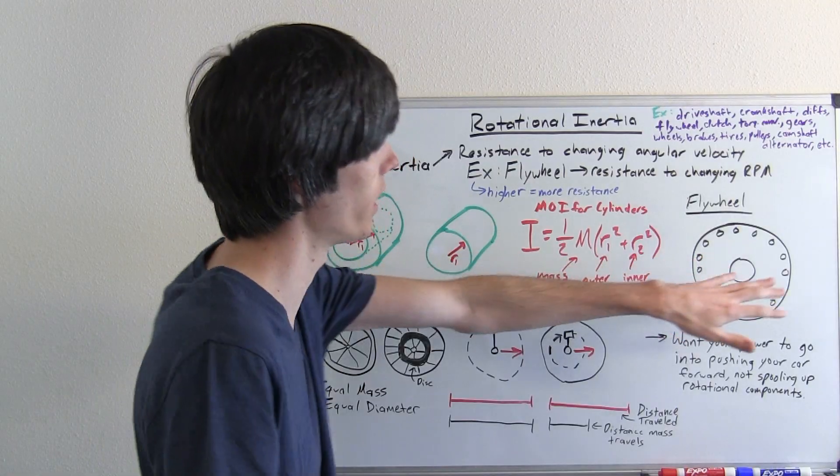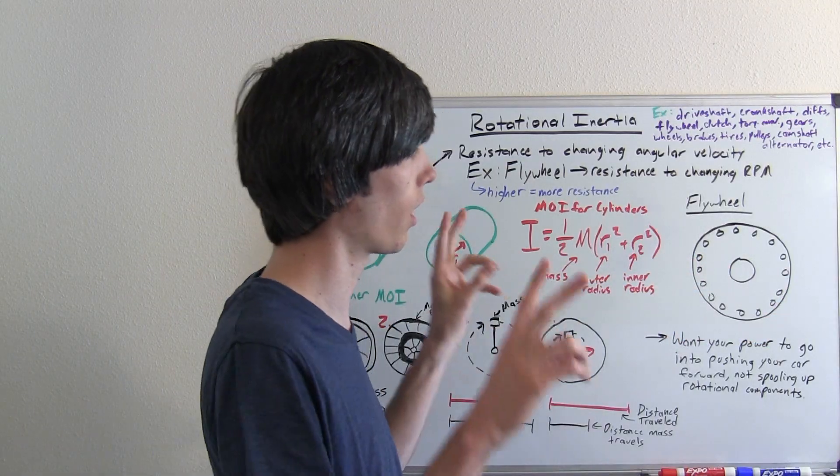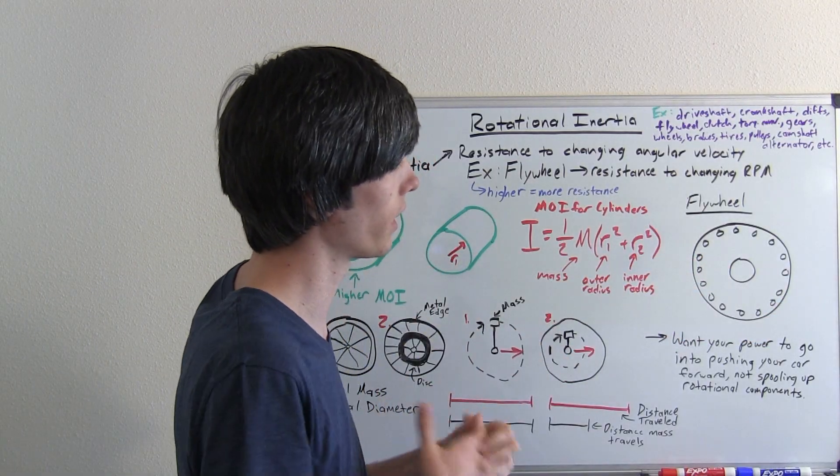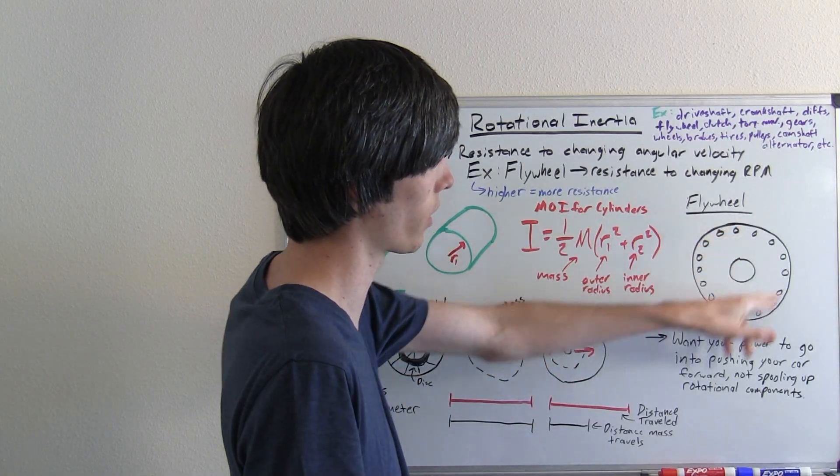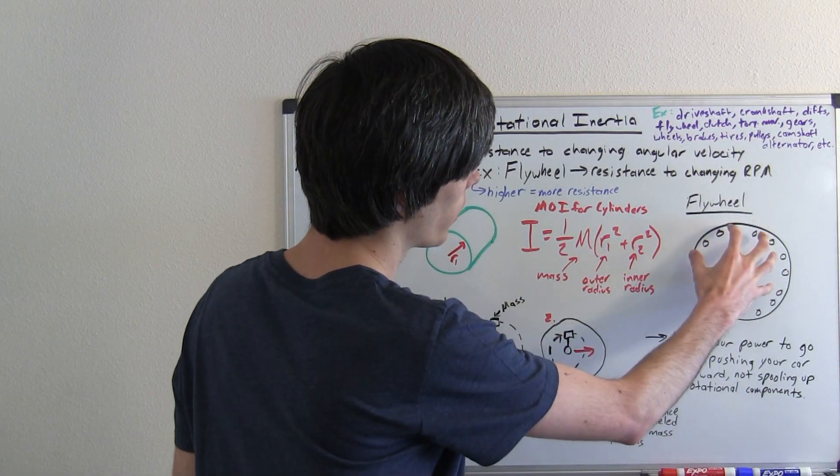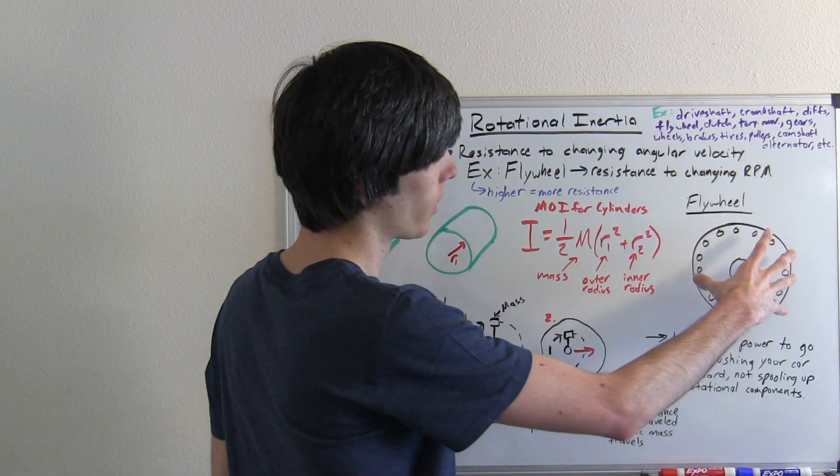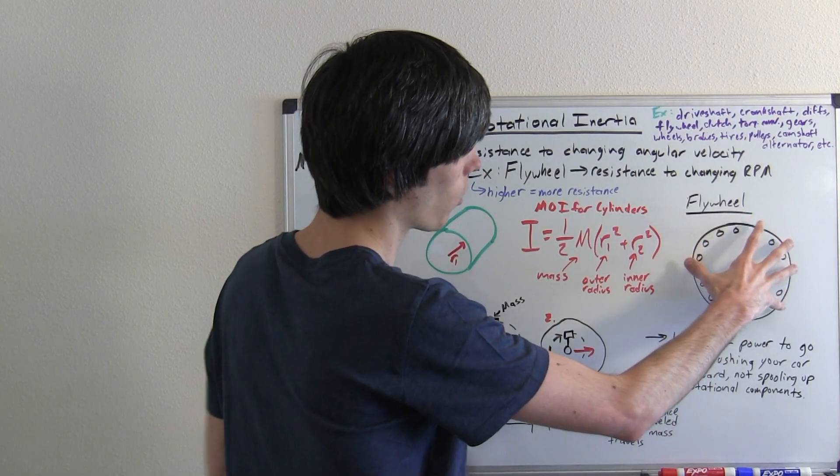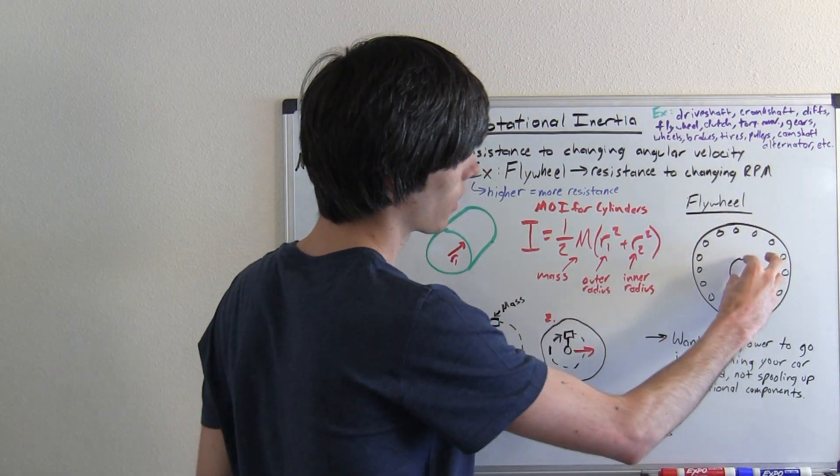I've just got an example drawn here. You may see, for example, like a racing flywheel, and what they do is they'll take out, you may see like holes punched out of the outer edge. So that's what they're doing, they're reducing the moment of inertia by pulling the mass away from the outside and getting it closer to the center.